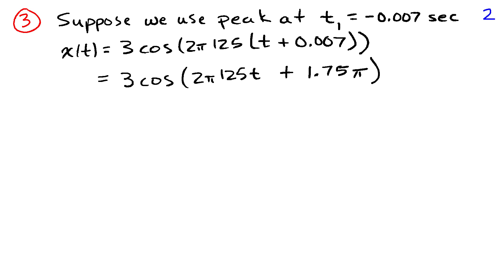I want to consider what would happen if we used a different peak to find the time shift. Suppose we take the peak that occurs in the sinusoid at negative 0.007 seconds instead of using the peak that was closest to the origin. So I can write my sinusoid x of t as 3, same amplitude, cosine of 2 pi 125, same frequency, times the quantity t plus 0.007. So in this case, I'm regarding the sinusoid as having been a cosine whose peak was at zero, and then I'm taking that peak and I'm shifting it to the left by 0.007 seconds, hence plus 0.007.